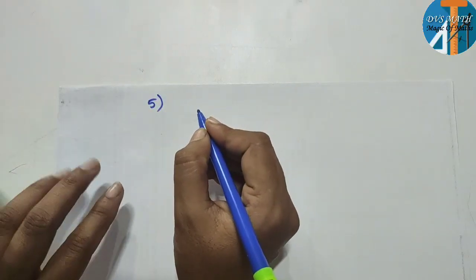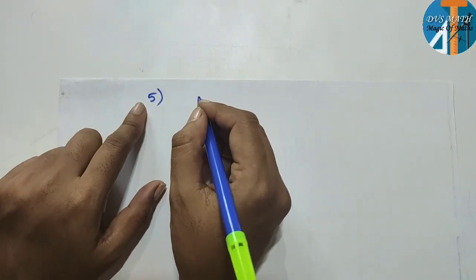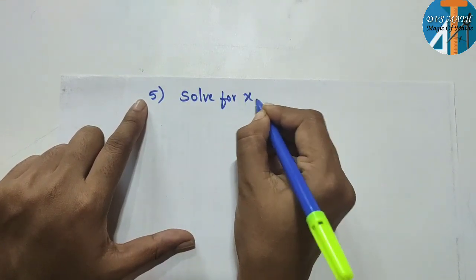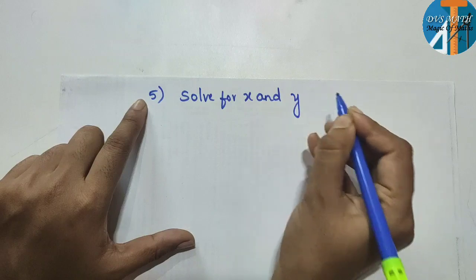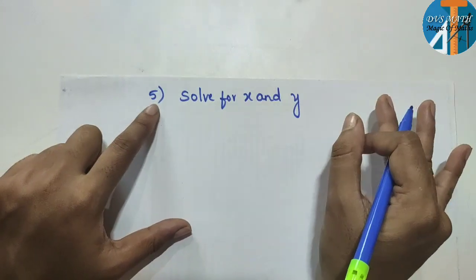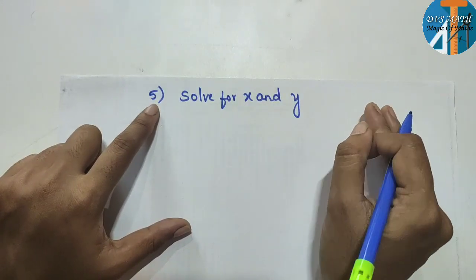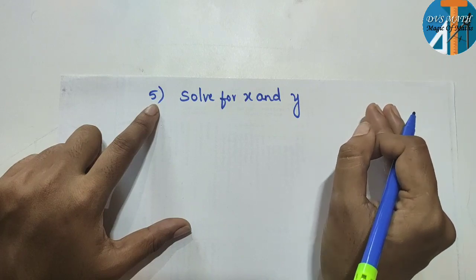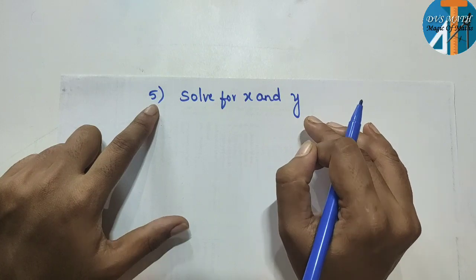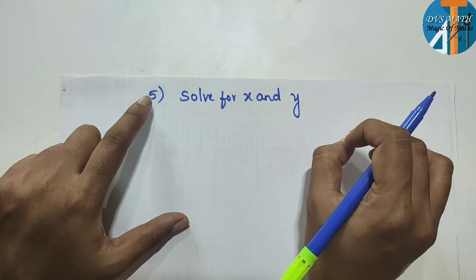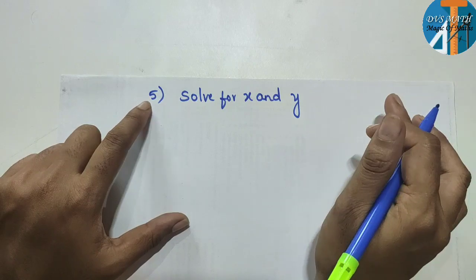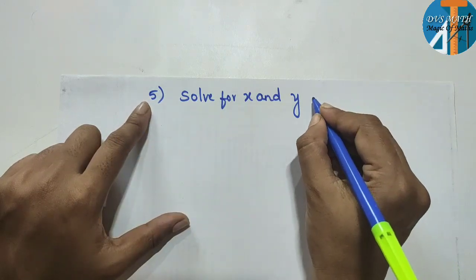Question number five: solve for x and y. Solve for x and y — you can use any method: substitution method, elimination method, or cross multiplication method. I say the elimination method is best, as I showed in the previous video how to easily solve it.